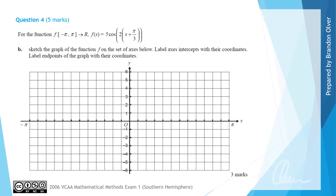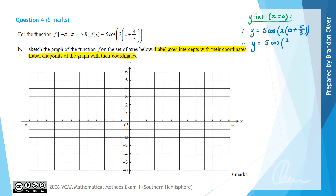For part b, we're asked to sketch the graph of the function f on the set of axes below, labelling axes intercepts with coordinates and endpoints of the graph with coordinates as well. To start with, we're going to find the y-intercept by letting x equal 0. Therefore, y is equal to 5 cos of 2(0) plus pi on 3, which gives 5 times cos of 2 pi on 3. The exact value for cos of 2 pi on 3 is negative one half, so this gives negative 5 on 2 as the y-intercept.